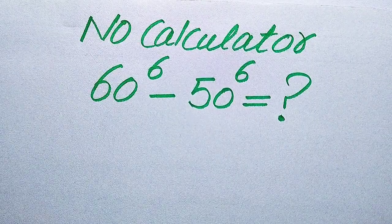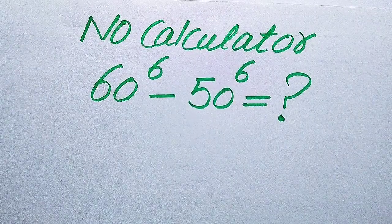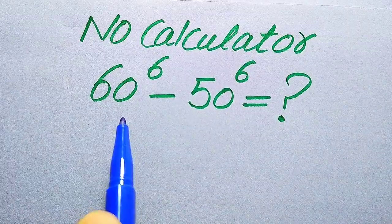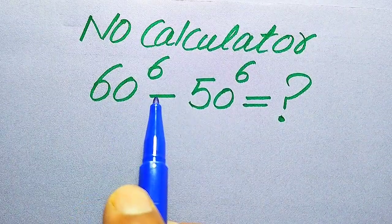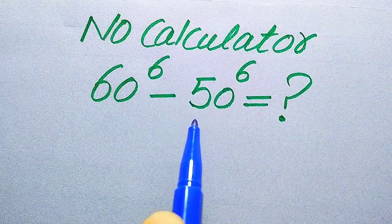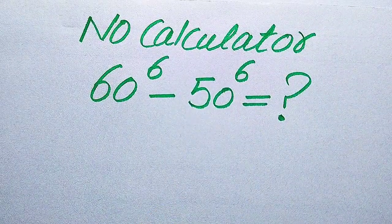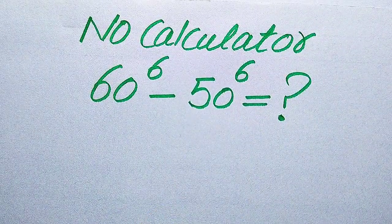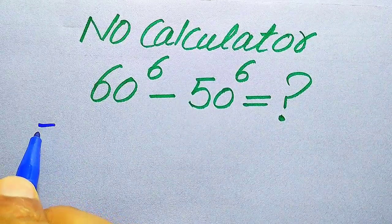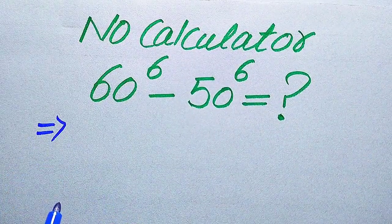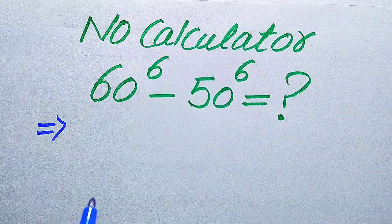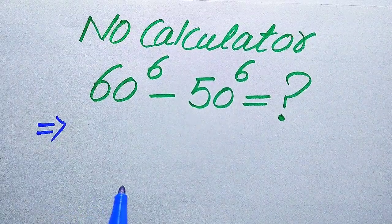Hello everyone. How to simplify this nice algebraic expression without using the calculator, if we have 60 to the power of 6 minus 50 to the power of 6? We write this algebraic expression into simplified form. I hope you like this method, but if you have any other method in mind, please don't hesitate to write it into the comment section.